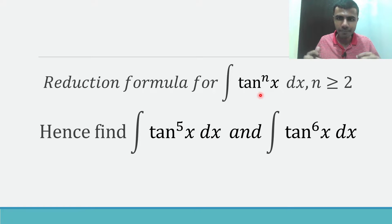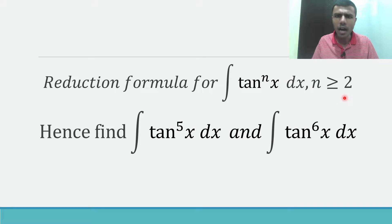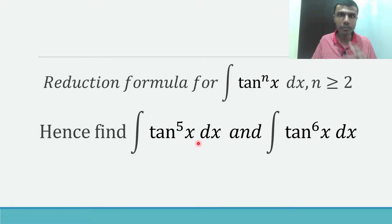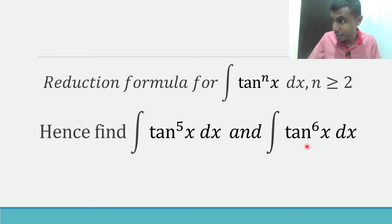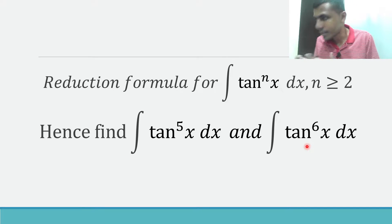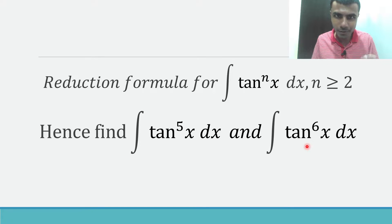Here n is a positive integer and it is greater than or equal to 1. Once we find out the reduction formula, we also have to find out the integral of tan^5 x dx and the integral of tan^6 x dx. I have with me Krishna, who is going to ask some questions and doubts in between. I would love if you guys also interact and participate.